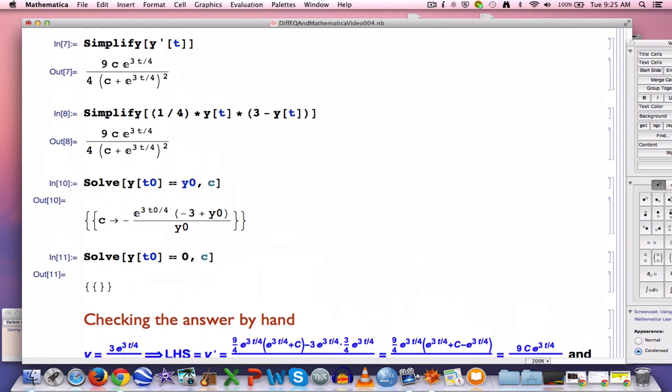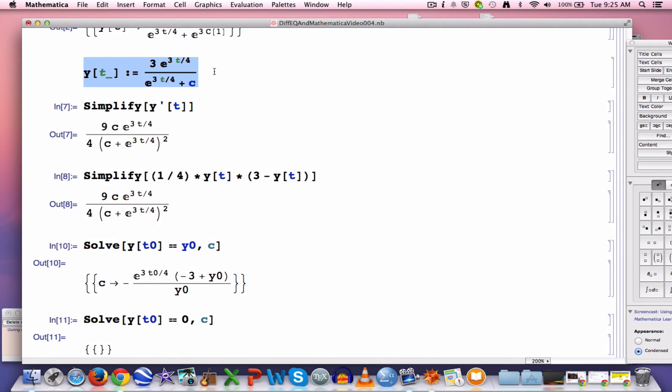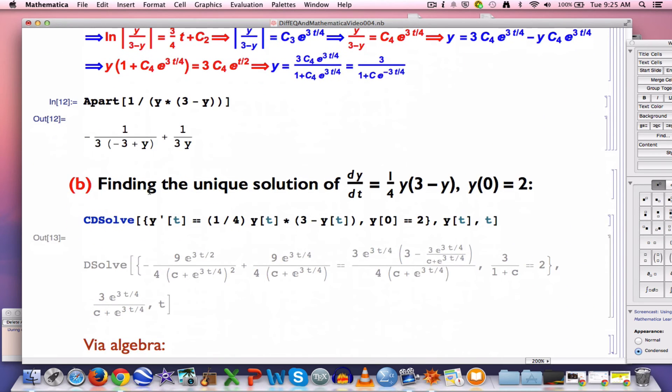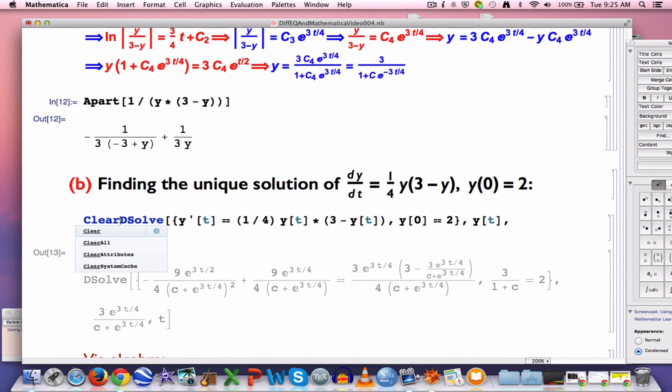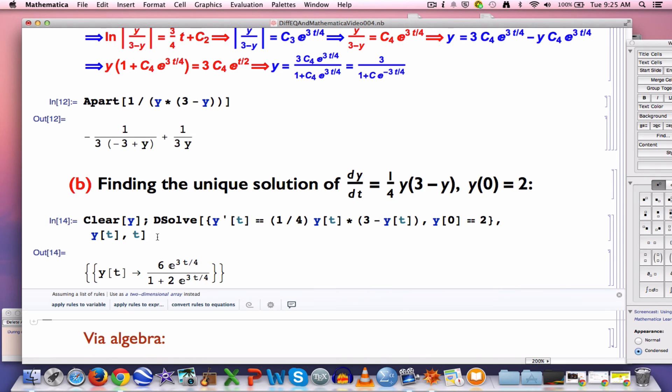y is in Mathematica's memory as a function of t back from up here. So it's always a good practice to clear your variables ahead of time. We can clear y with this code right here, clear y before using DSolve. Semicolons just suppress output. However, I'm using it also as something to separate these different lines of code. Now DSolve works. It produces this as your answer.